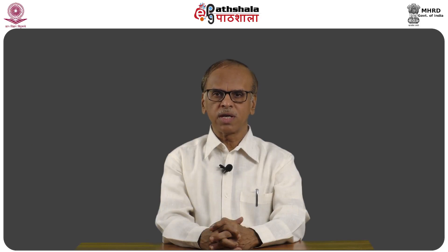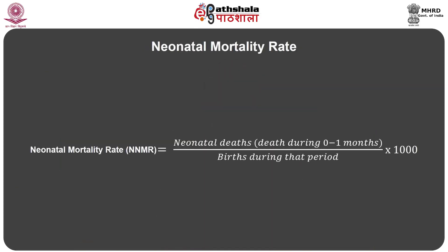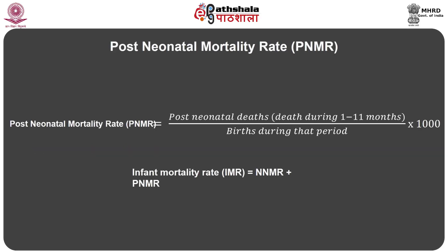Infant deaths in IMR are generally divided into two categories: neonatal deaths, occurring before completion of 1 month of age, and post-neonatal deaths, occurring between the first and 11 completed months. Neonatal mortality rate (NNMR) equals neonatal deaths divided by births during that period multiplied by 1000. Post-neonatal mortality rate (PNMR) equals post-neonatal deaths divided by births during that period multiplied by 1000. Hence, IMR equals NNMR plus PNMR.